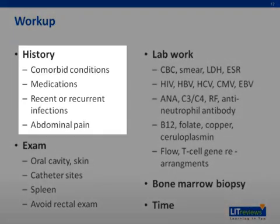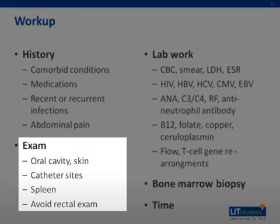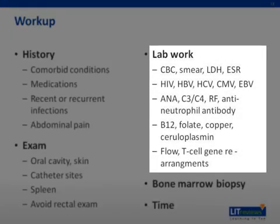The investigation of neutropenia starts with taking a history. Asking about comorbid conditions such as rheumatoid arthritis, new medications such as propylthiouracil, or recent infections can point to the cause of neutropenia. Symptoms such as recurrent infections or abdominal pain can suggest the severity and degree of functional neutropenia. The exam should focus on the oral cavity, skin, or catheter sites, where ulcerations, abscesses, or signs of infection are prominent. A large spleen can suggest hypersplenism. Avoid doing a rectal exam, as this may introduce bacteria. Lab work such as the CBC is essential to establishing neutropenia, and the peripheral smear can give insight into whether there is a bone marrow disturbance. LDH and ESR can give a sense of inflammation. Viral studies can look for a cause of neutropenia.